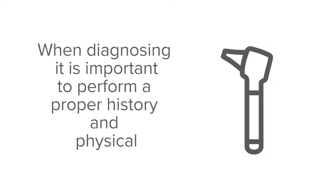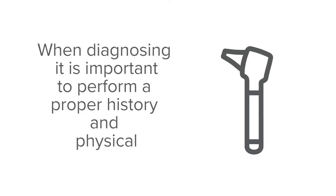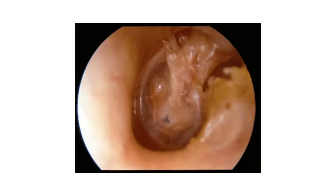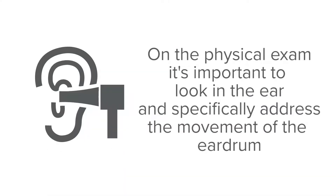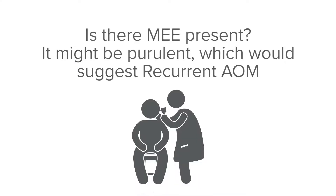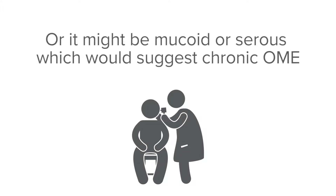When diagnosing either entity, it's important to perform a proper history and physical. In this example, you can see a middle ear effusion with bubbles around the periphery of the drum. On the physical exam, it's important to look in the ear and specifically address the movement of the eardrum. Is there a middle ear effusion present? It might be purulent, which would suggest recurrent acute otitis media, or it might be mucoid or serous, which would suggest chronic otitis media with effusion.